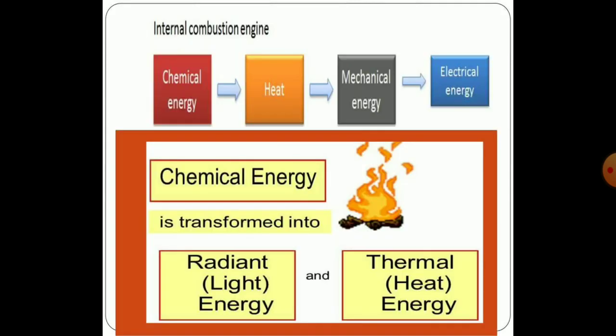The internal combustion engine runs on the basic cycle where chemical energy from fuels, oxygen, and sparking generates mechanical energy, which also belongs to electrical energy. The chemical energy is transformed into radiant energy — that is, light energy — and finally used in the form of thermal energy, that is, heat energy.